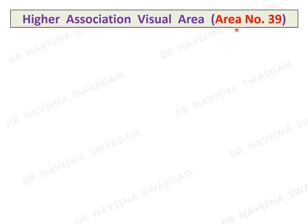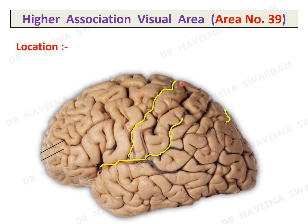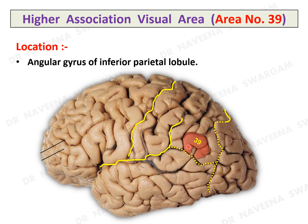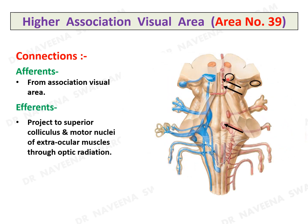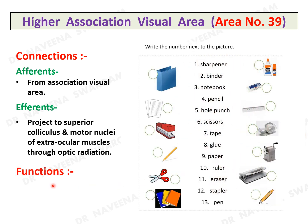Higher association visual area, area 39: here are the central sulcus, posterior ramus of the lateral sulcus, parieto-occipital sulcus, and imaginary lines separating the occipital lobe from the parietal and temporal lobes. The area occupies the angular gyrus of the inferior parietal lobule, which surrounds the tip of the superior temporal sulcus. It receives major afferents from the association visual area; efferents pass through optic radiation and reach the superior colliculus through the lateral geniculate body, connected to the motor nuclei of the extraocular muscles. It is concerned with comprehension of objects and symbols of language by processing visual impressions.